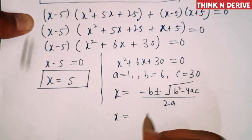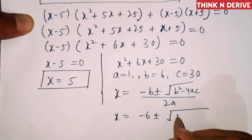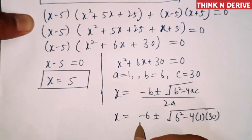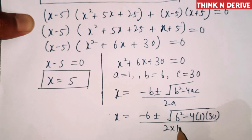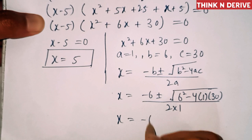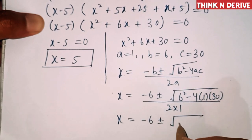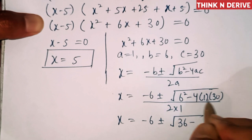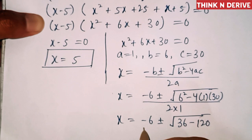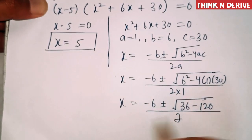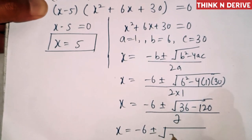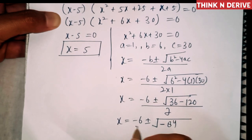Substituting the values: x = (−6 ± √(6² − 4 × 1 × 30)) / (2 × 1), which equals (−6 ± √(36 − 120)) / 2, giving x = (−6 ± √(−84)) / 2.